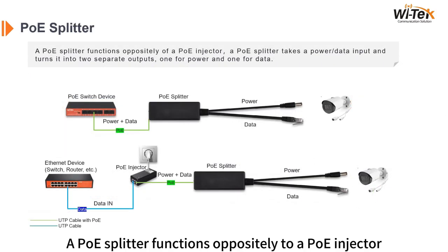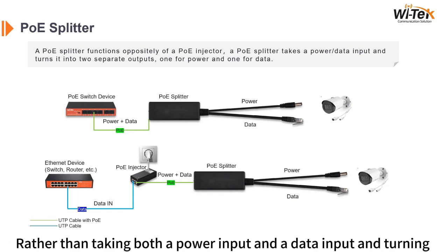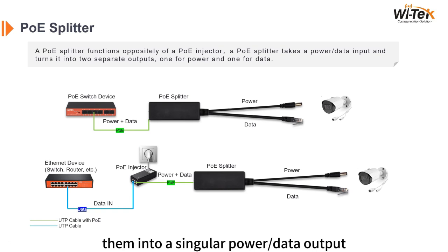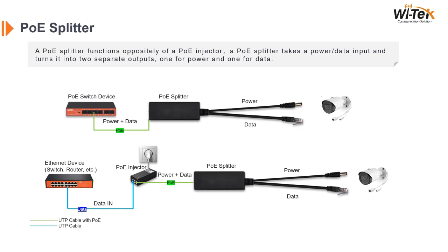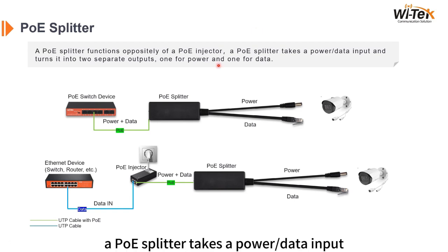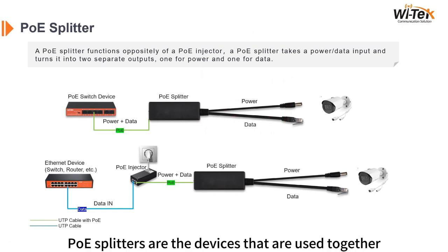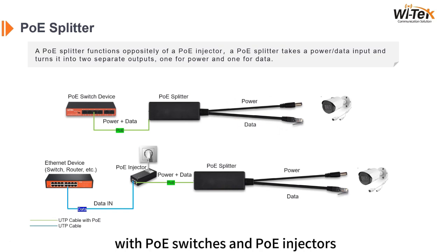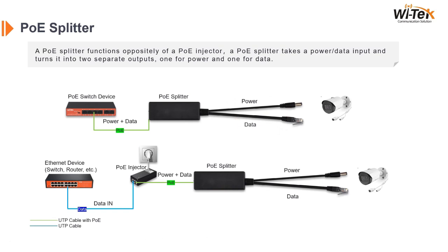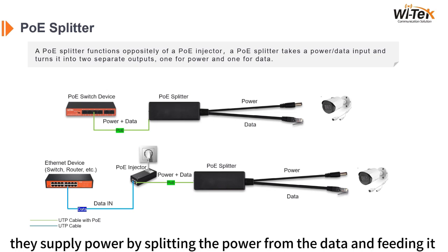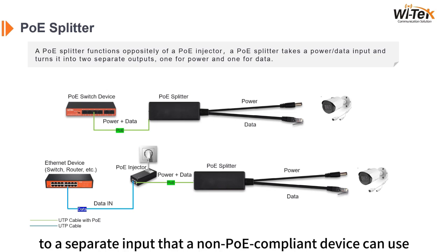A PoE splitter functions oppositely to a PoE injector. Rather than taking both a power input and a data input and combining them into a singular output, a PoE splitter takes a power or data input and turns it into two separate outputs — one for power and one for data. PoE splitters are used together with PoE switches and PoE injectors. They supply power by splitting the power from the data and feeding it to a separate input that a non-PoE-compliant device can use.